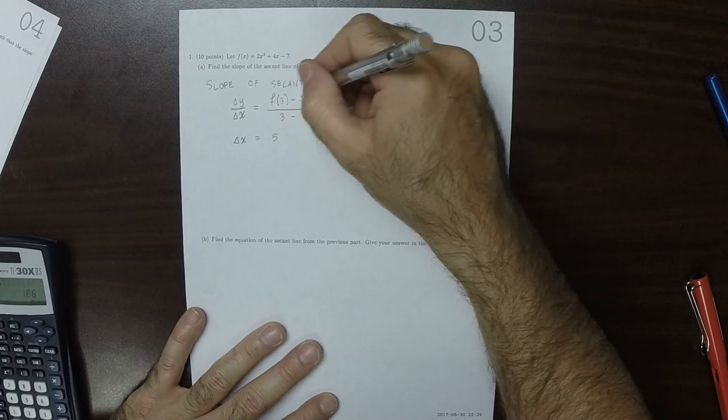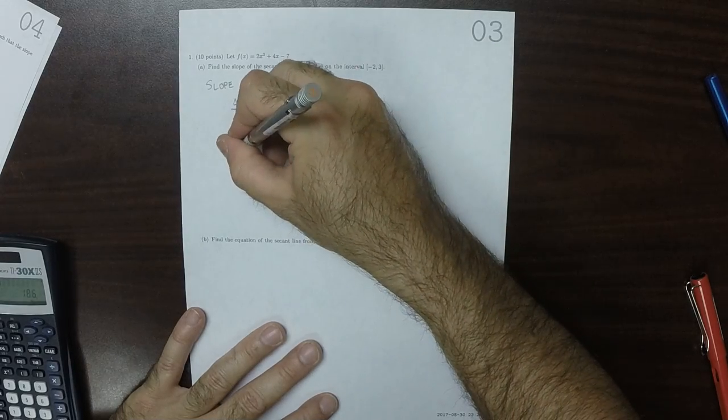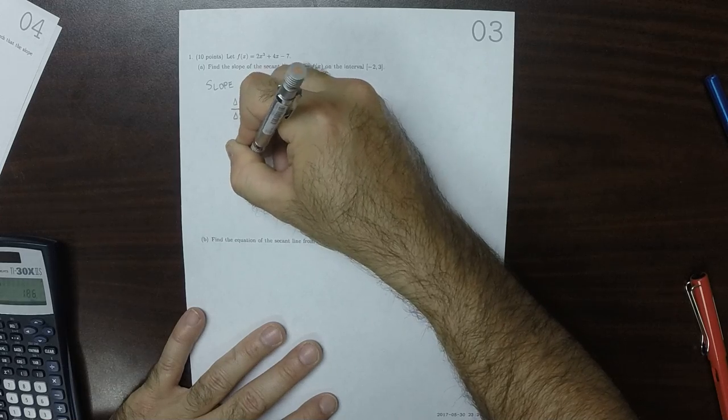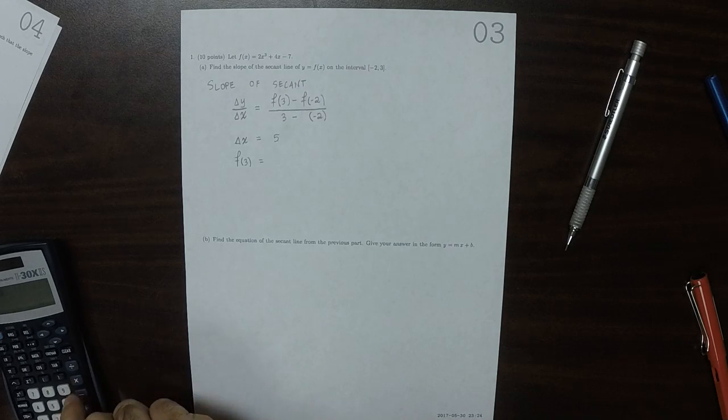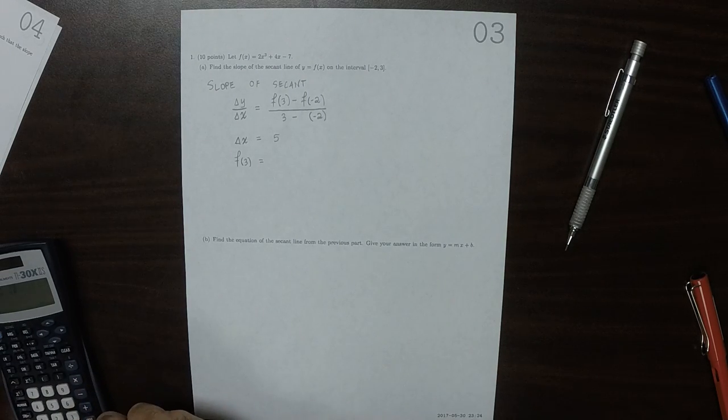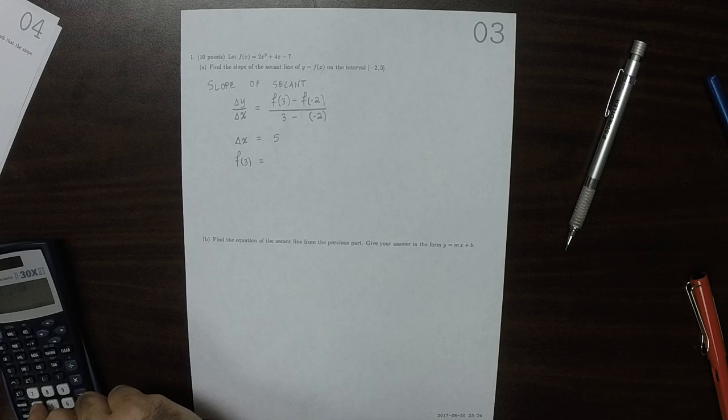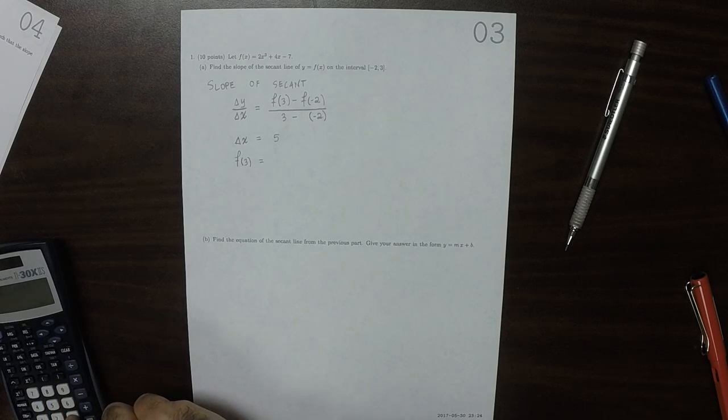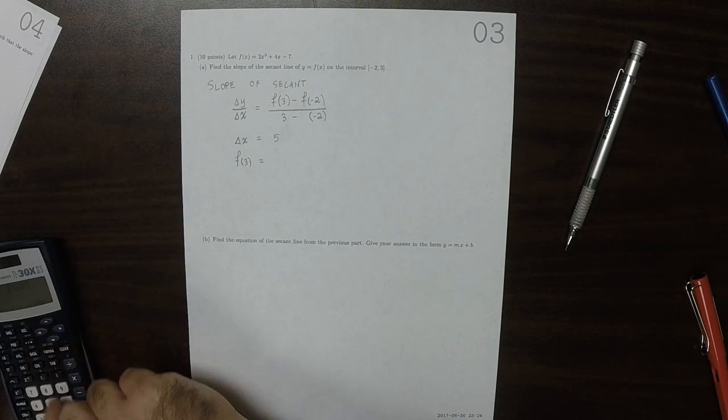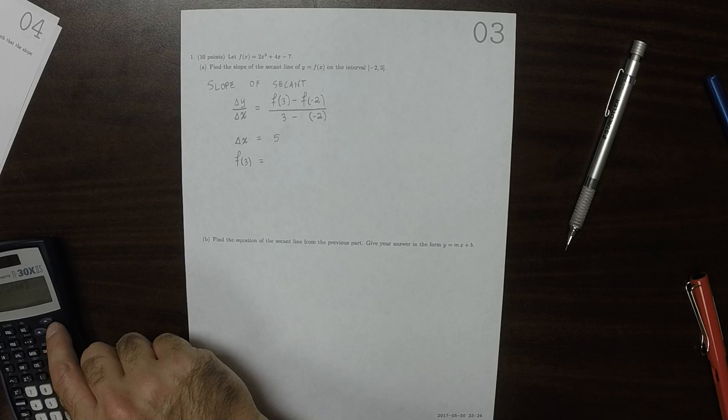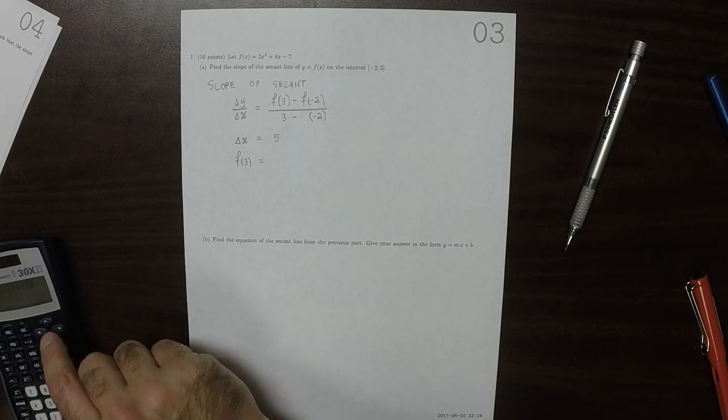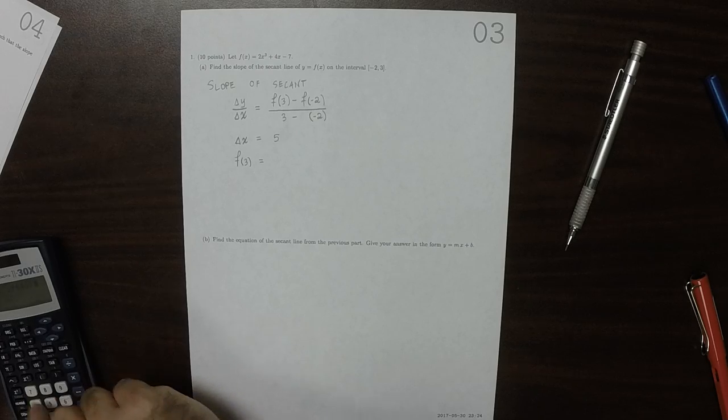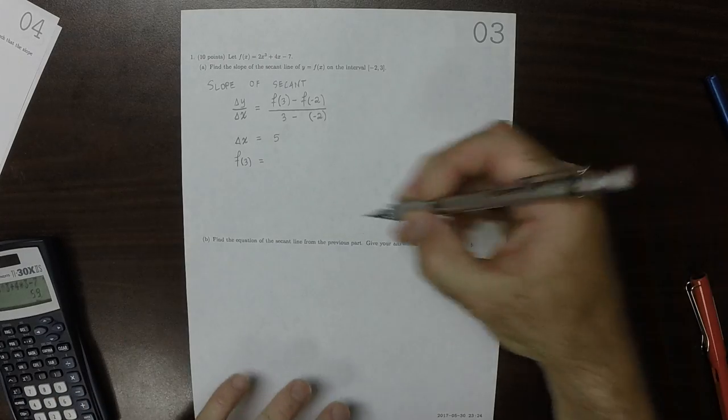And now I'm going to do each one of those individually. f of 3 is 2 times 3 squared plus 4 times—so that's 2 times 3 cubed. 2 times 3 cubed plus 4 times 3 minus 7. That's 59.